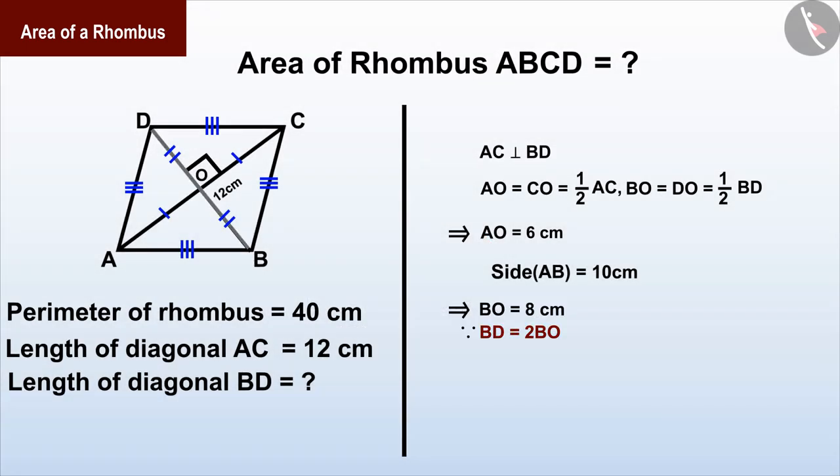BD is double of BO. Since the value of BO is 8 centimeters, the length of the diagonal BD is 16 centimeters.